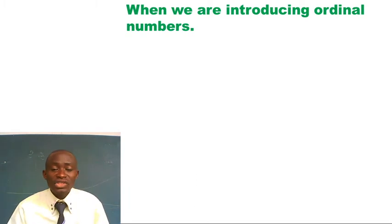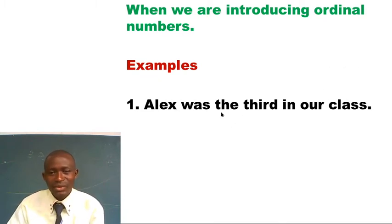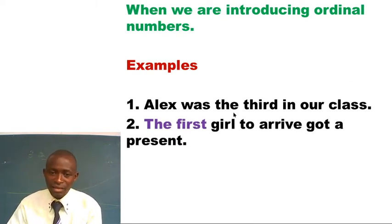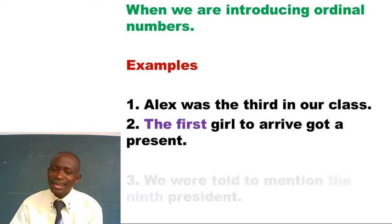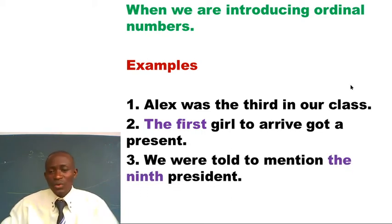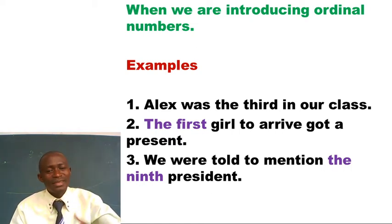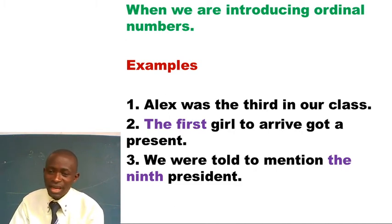'Jimmy was the best student in our class.' 'Alex was the third in our class' — we are using the word 'third' with article THE. 'The first girl to arrive got a present.' 'First' is one of the ordinal numbers; when using an ordinal number, we use article THE. We were also told to mention 'the ninth president' — ninth falls under ordinal numbers, so we introduce it with article THE.